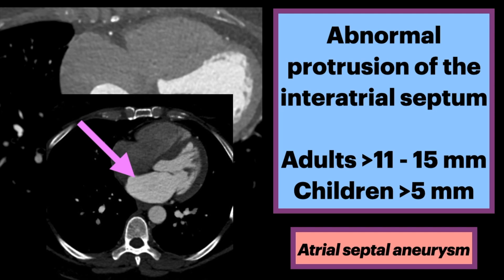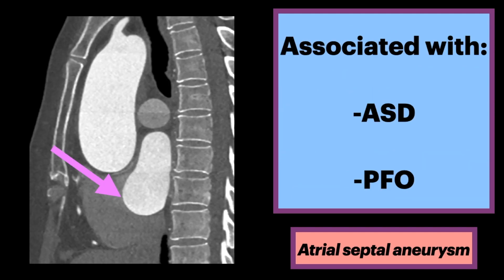Here's another example showing bulging of the interatrial septum into the right atrium. It is associated with ASDs and PFOs. An ASD, atrial septal defect, is a through-and-through communication in the interatrial septum that typically allows blood to go from the left to right chambers.